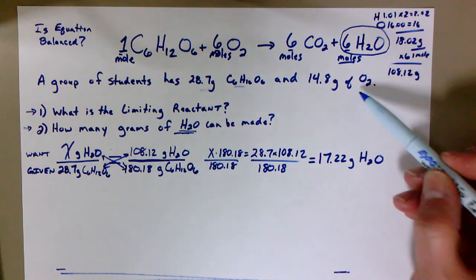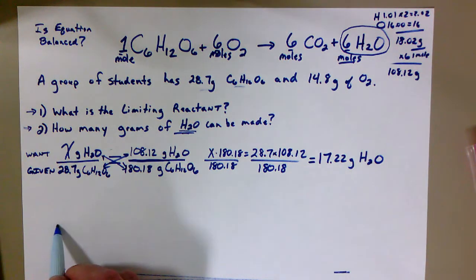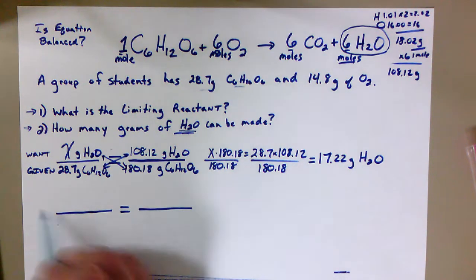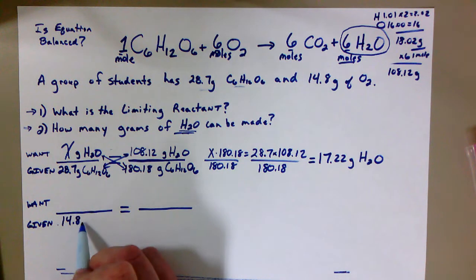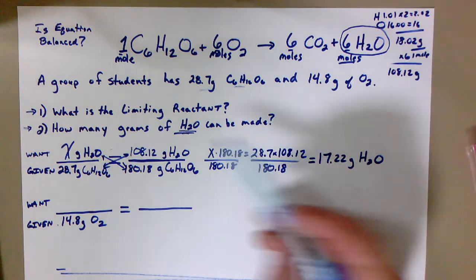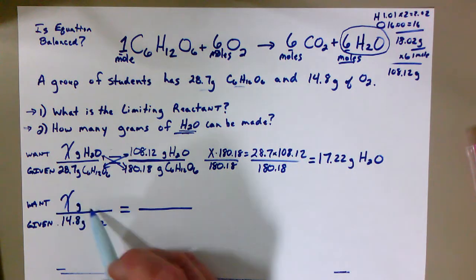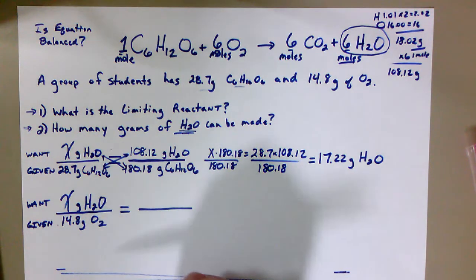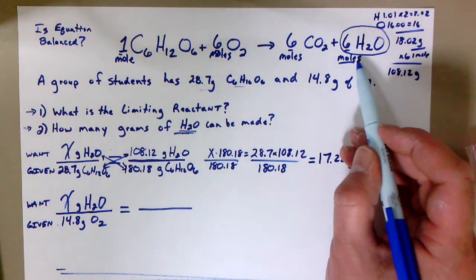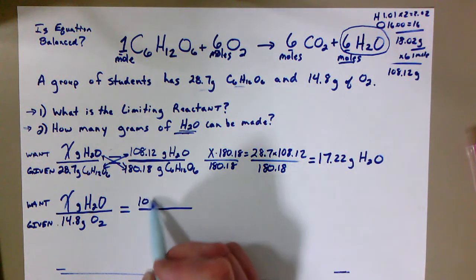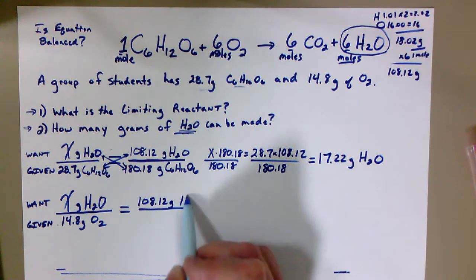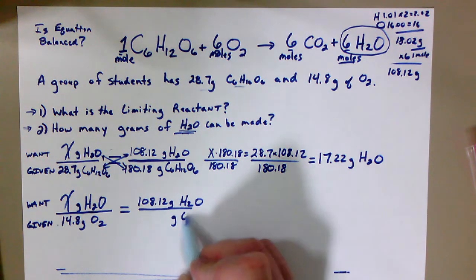But we've got to do the same thing now for our other ingredient, our other reactant. We've got to see how much can the 14.8 grams of O2 create. So I'll make my proportion. Again, the want goes on top, what's given goes on the bottom. We are given 14.8 grams of O2. We want the same thing, it's still grams of H2O. Well, that's kind of nice because we already know what we're going to do for the top. It's still the weight, the grams for six moles of H2O, so it's still going to be that 108.12 grams of H2O.